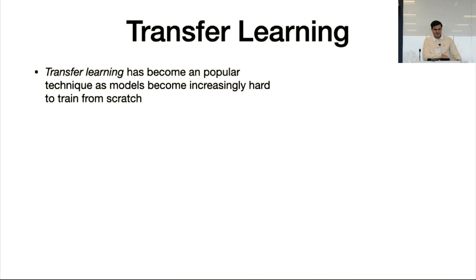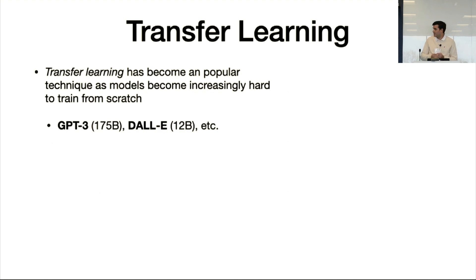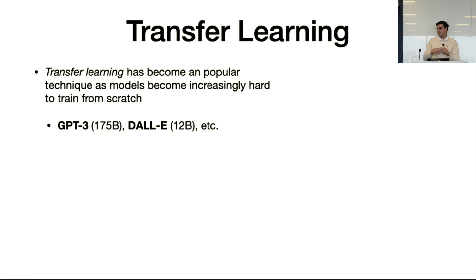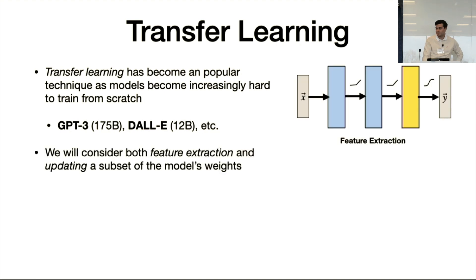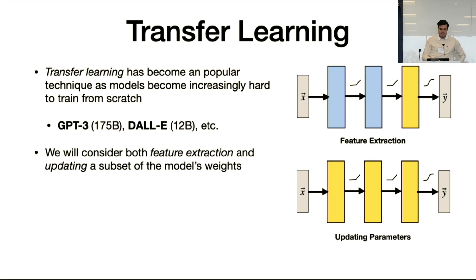Transfer learning is a really popular technique that has emerged as models become increasingly harder to train from scratch. When we wrote this paper, GPT-3 was state of the art with around 170 billion parameters. Fine-tuning allows us to apply the power of models like GPT-3 to specific downstream tasks without training from scratch. We consider two kinds of fine-tuning: final layer fine-tuning, or feature extraction, where we freeze most weights, and full model fine-tuning where a larger subset of parameters are updated.